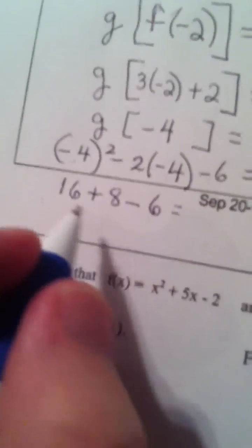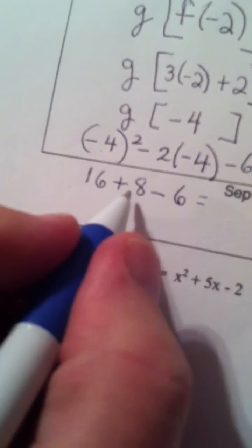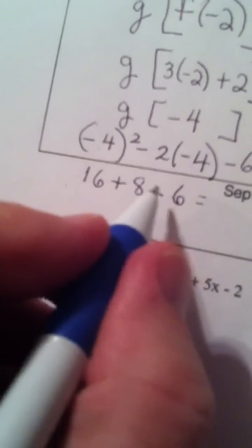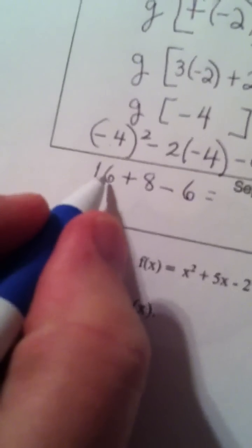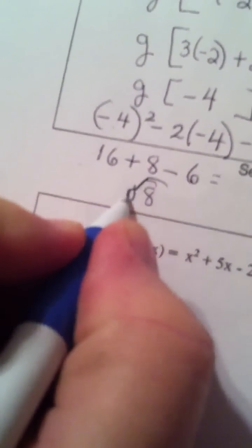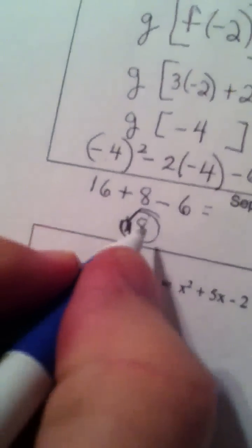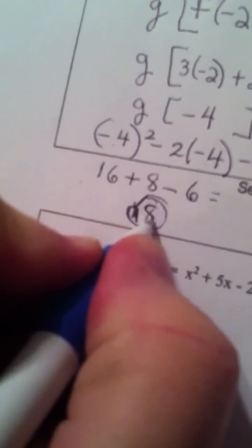Okay, and 24 minus 6. So this is going to become 24, minus 6, is going to give me the answer, 18. So my final answer is 18, the number 18.